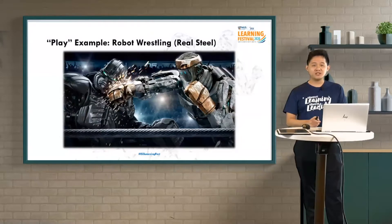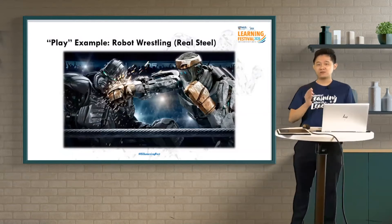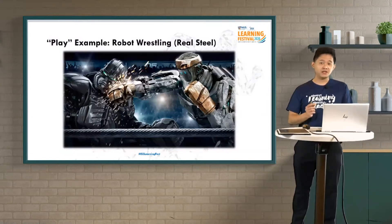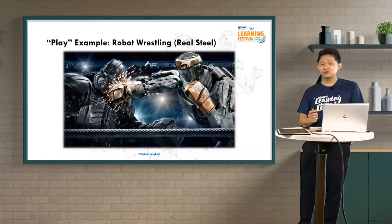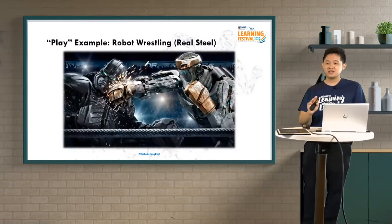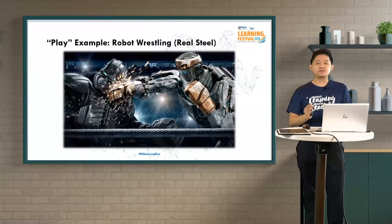The last example — though not yet implemented — is robot wrestling, known as the robot resting under the play spectrum. If you are interested, you can watch the movie Real Steel starring Hugh Jackman — it's about a two-hour movie. I'd say it's a pretty good movie that gives you a good grasp of what I mean by robot wrestling.